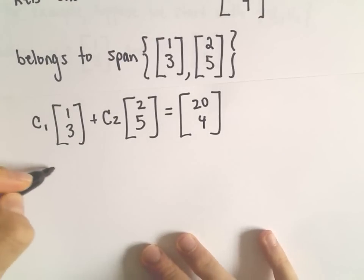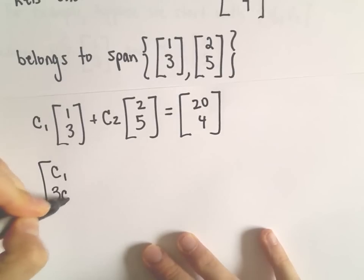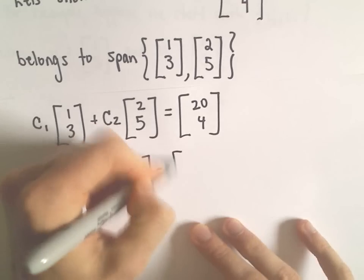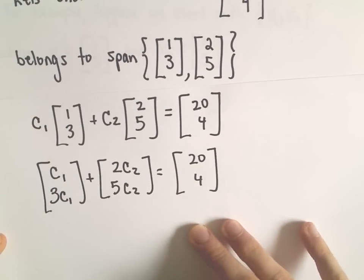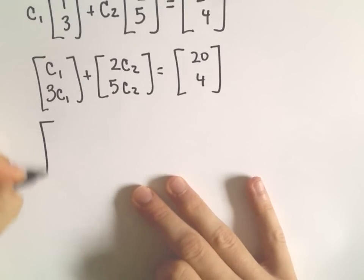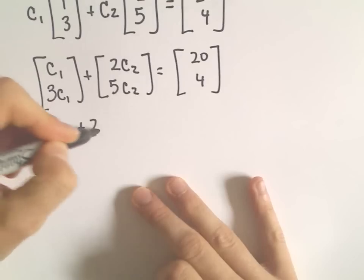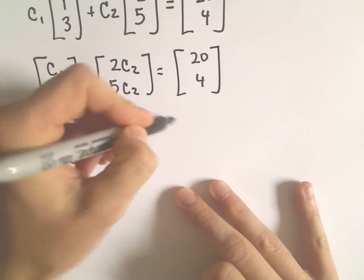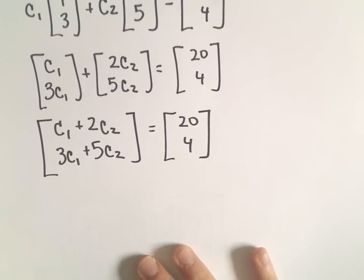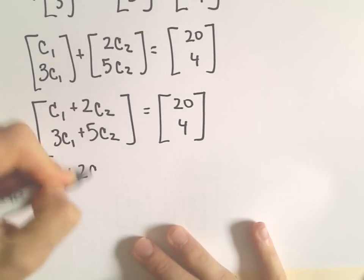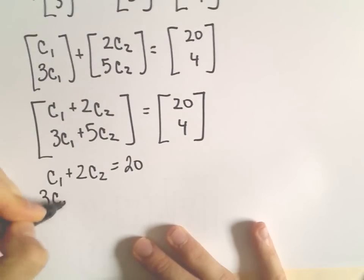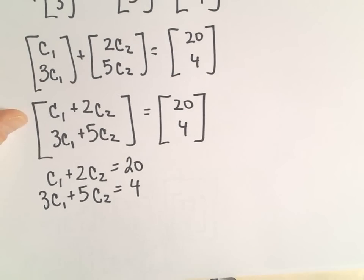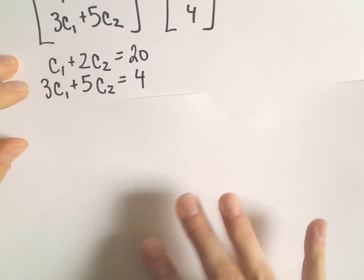We have to find some constant C sub 1, so that when I multiply that by [1, 3], and some other constant C2, so that when I multiply that by [2, 5], we get the vector [20, 4]. We can write this as a little system of equations. So we've got C1 plus 2C2 equals 20, and 3C1 plus 5C2 equals 4. We take the coefficients 1, 2, 3, 5 and put 20 and 4 on the other side as an augmented matrix.